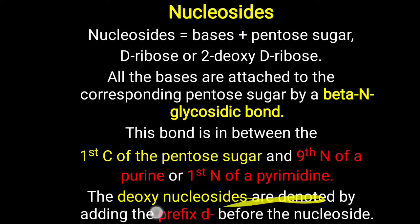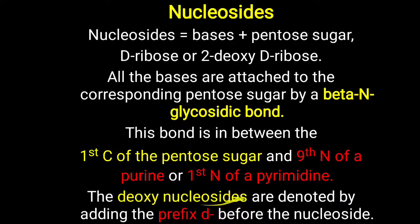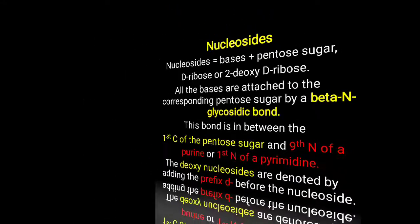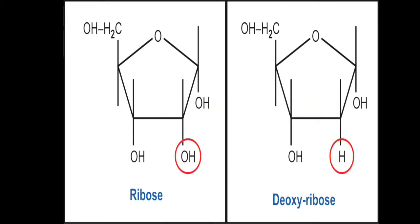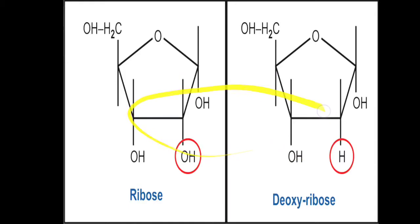Deoxynucleosides are denoted by adding the prefix 'd'. Whenever a nucleoside contains deoxyribose sugar, a small 'd' is written before the molecule name. Ribose sugar is present in RNA, deoxyribose in DNA — the only difference being the absence of a hydroxyl group at the second position, replaced by a simple hydrogen. Both sugars are pentoses in a furanose ring structure. This furanose ring structure of pentose sugar in DNA and RNA is sometimes asked in exams.